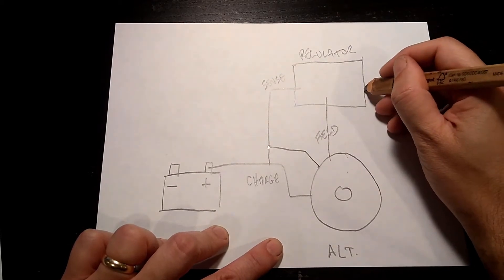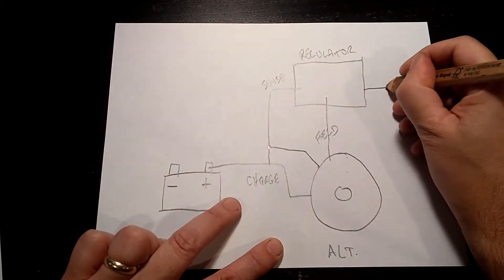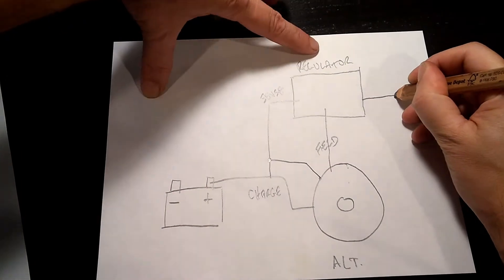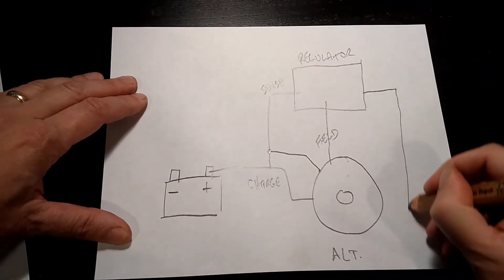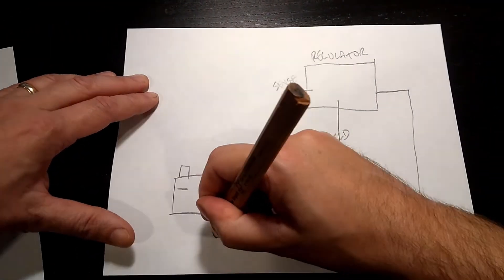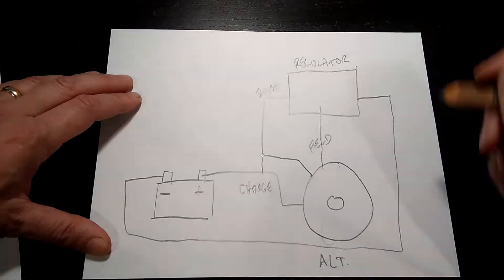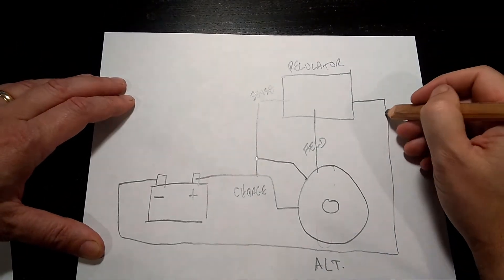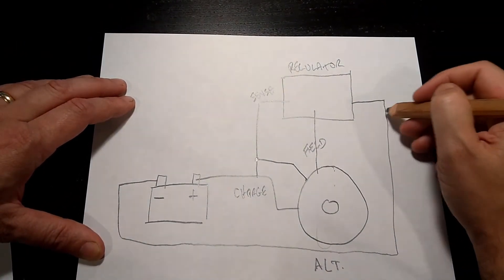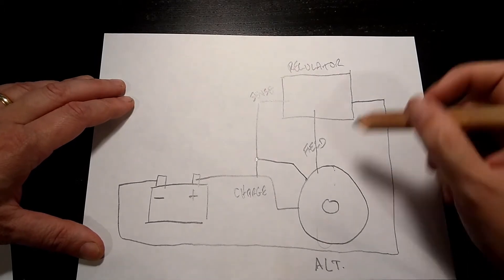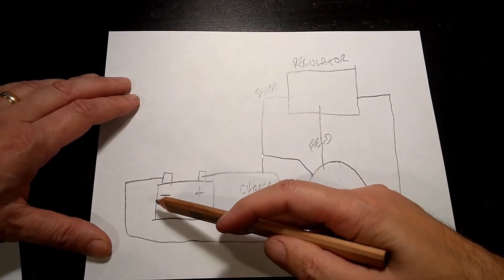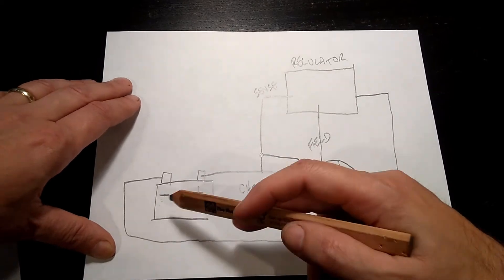And then from the regulator, there is some route that passes all the way back to the negative side of the battery. Oftentimes this will just be connected to the body or the chassis, and the negative side of the battery is also connected to the chassis and or body.